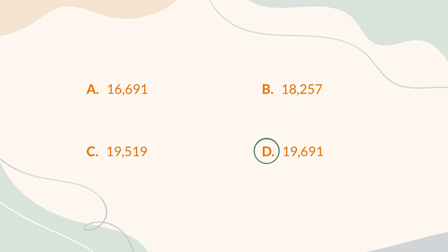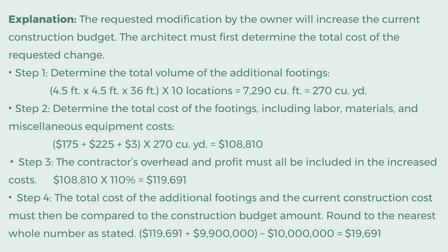The correct answer is D. $19,691. Explanation: The requested modification by the owner will increase the current construction budget. The architect must first determine the total cost of the requested change. Step 1: determine the total volume of the additional footings. 4.5 feet × 4.5 feet × 36 feet × 10 locations = 7,290 cubic feet, or 270 cubic yards.